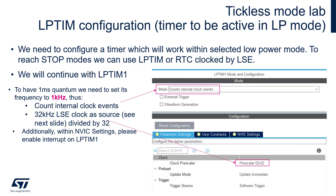Within our example, we will use a low-power timer as a timer which will work in the background while we are in low-power mode. It will be configured to 1kHz and it will be sourced by LSE Crystal 32kHz, which is present on the Nucleo L476RG board.